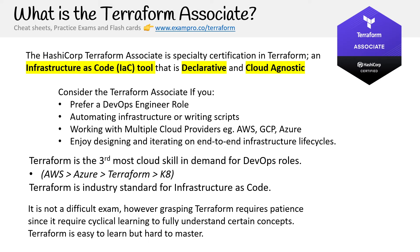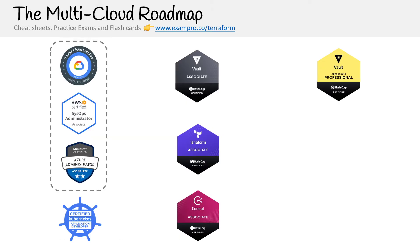Just because you pass the Terraform Associate doesn't mean you're an expert, but it definitely means you're going to have the skills to meet job requirements for junior DevOps roles, or if you're upskilling. There are multiple ways to look at this — I call it the multi-cloud roadmap, because everything that HashiCorp does is all about multi-cloud workloads.